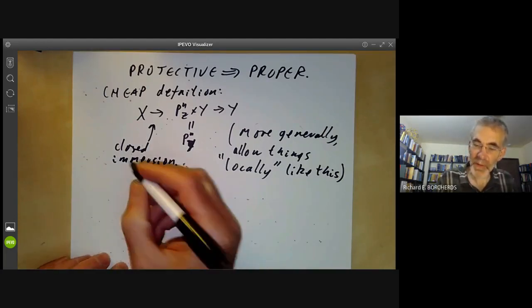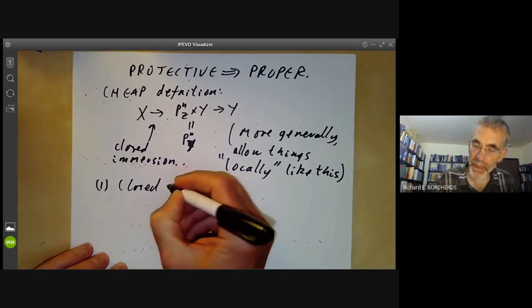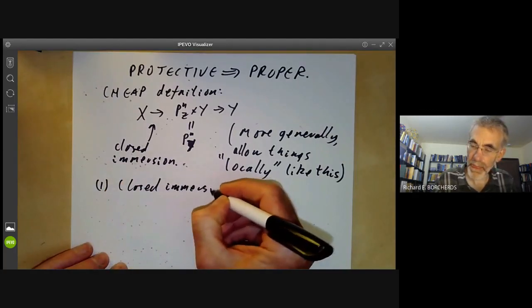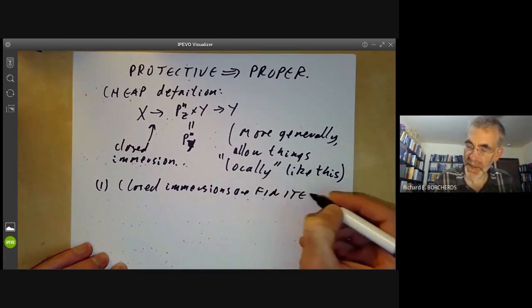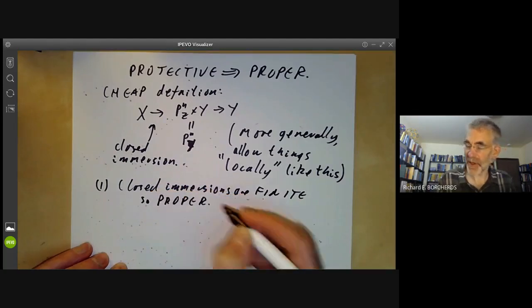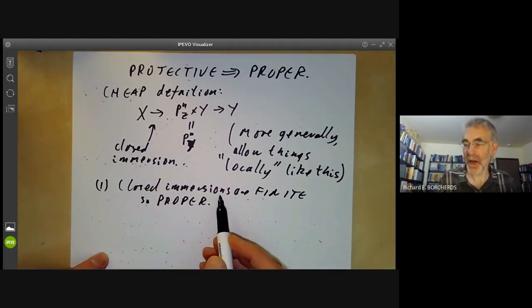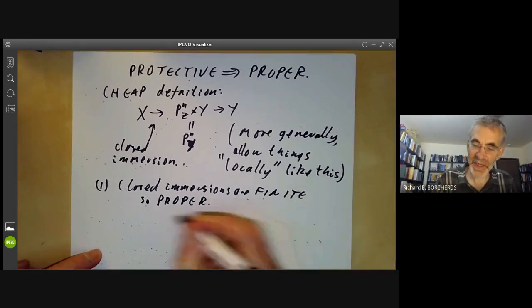So first of all, there's some easy bit. Closed immersions are finite, so are proper. Actually, proving closed immersions are proper is much easier than proving finite morphisms are proper. So we're being a bit lazy here using that.